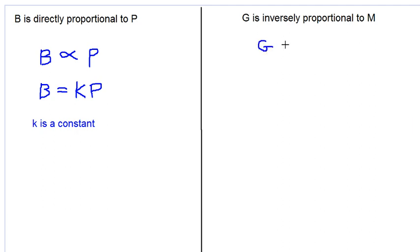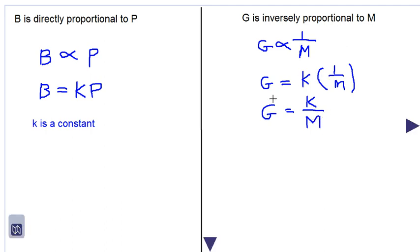It means G is directly proportional to the inverse of M or 1 over M. That means G is equal to some constant multiplied by 1 over M. And that means G will be equal to K times 1, as K over M. So again, K is a constant.